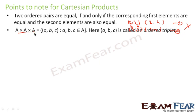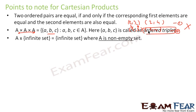When we say A×A×A, this is nothing but {(a,b,c)} where all a, b, c are part of A, and this is called an ordered triplet. When we say A into an infinite set, it gives an infinite set — just as in math, one times infinity is infinity. Similarly in sets, A times an infinite set is infinite because you would be creating an infinite number of product sets.